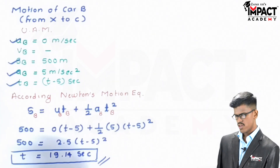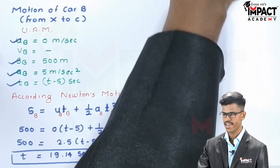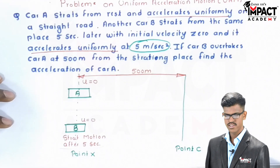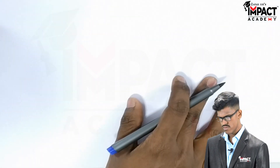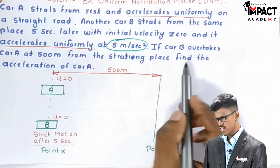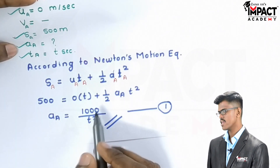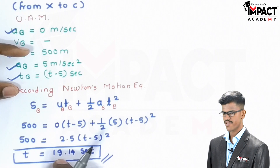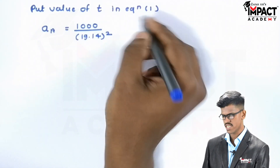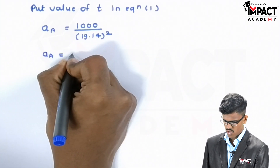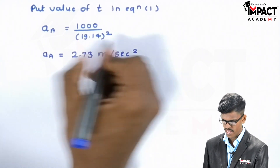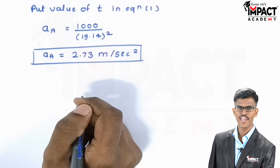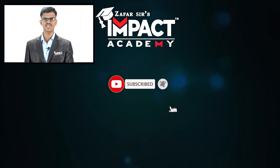We get the required time for car A to reach from starting point X to point C. In the question, they ask us to calculate the acceleration of car A. The equation for acceleration of car A is AA = 1000 / T². We calculated the time required for car A to reach point C, which is 19.14 seconds. Substituting this value of T into equation 1, we get the acceleration value 2.73 meter per second square. This is our final answer. If you find my videos helpful, please like, share and subscribe to our channel. Thank you.